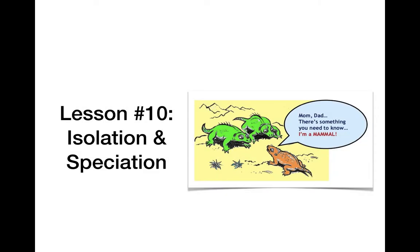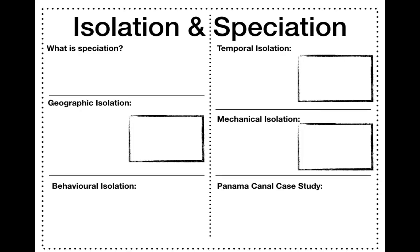Okay grade 9, this is lesson number 10: isolation and speciation. We have three lessons this week and that's the end of this unit, so next week we'll be doing review activities and then our unit test, and then moving on the following week to chemistry. So here we go — isolation and speciation.